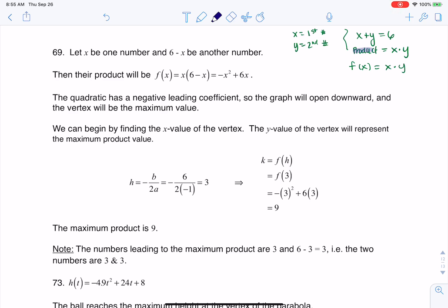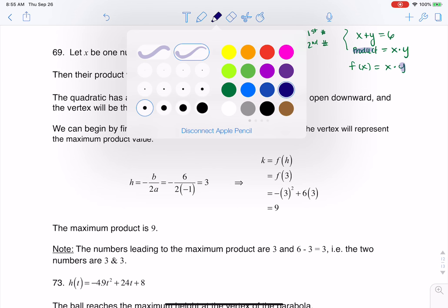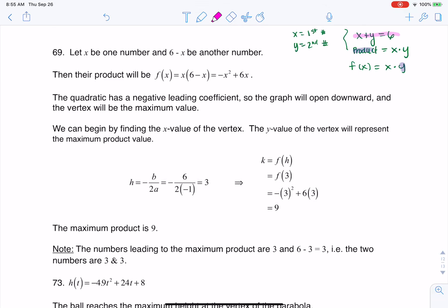Now, I can get rid of this y variable. How can I do that? Well, I know that x plus y was equal to 6, so if I manipulate this a little bit, I could say y was equal to 6 minus x.